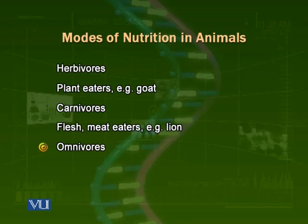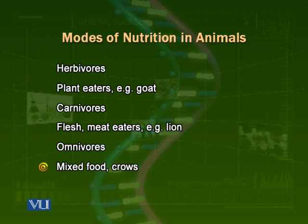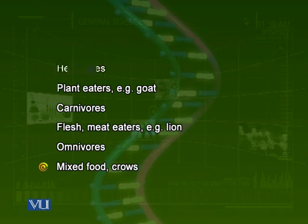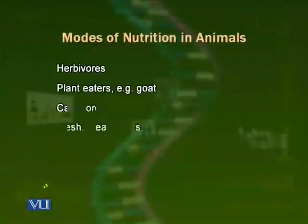Then come omnivores. These are animals which can eat both plants and meat, like human beings — we are omnivores. We eat meat and various plants like vegetables. Crows are also omnivores; they eat both animals and plant material.